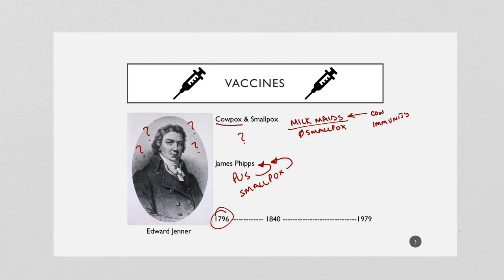Dr. Jenner repeated this a few times with other people, including some people in his family, and he found case after case where if a person had never had smallpox, but was given cowpox and then challenged with smallpox, they would not develop smallpox. At the time, the custom was to do something called variolation, where a physician gave you smallpox under medical supervision to ensure a milder course of the disease. The hope was that giving low-grade smallpox would confer immunity, and that was the practice of the day.